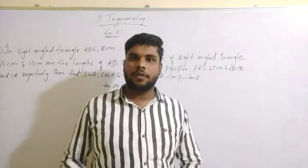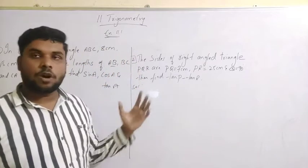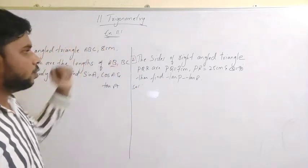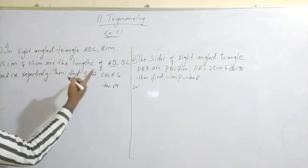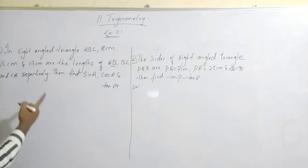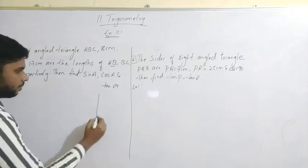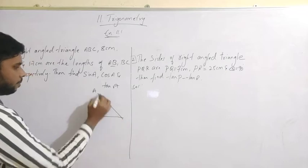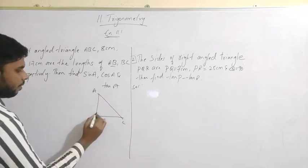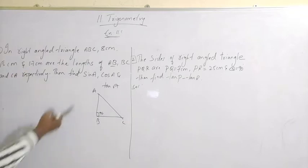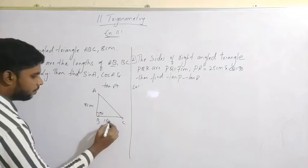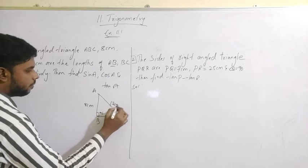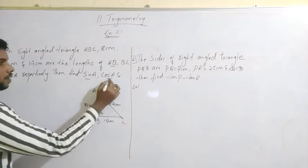In a previous video we discussed the basic concept of trigonometry. Now we are going to solve some textual questions of 10th class. Given a right angle triangle ABC, 8 cm, 15 cm, and 17 cm are the lengths of AB, BC, and CA respectively. We have a right angle triangle ABC with 90 degrees at B. AB is 8 cm, BC is 15 cm, and AC is 17 cm. We are asked to find sin A, cos A, and tan A.